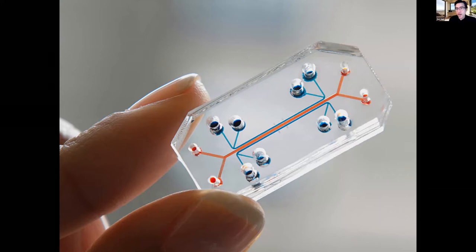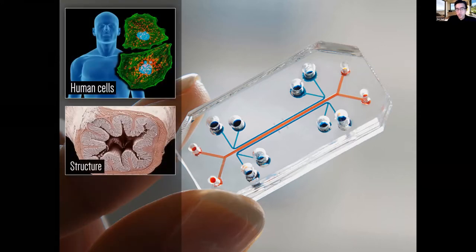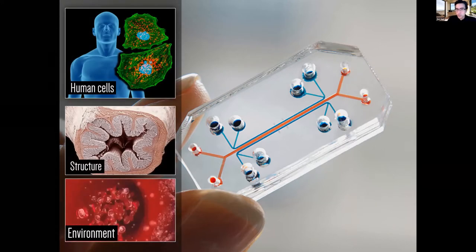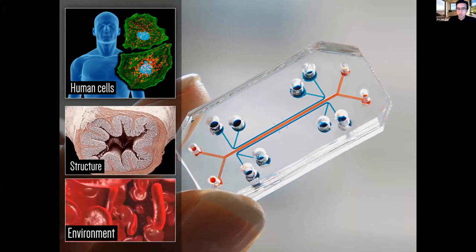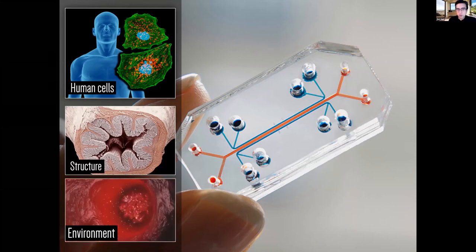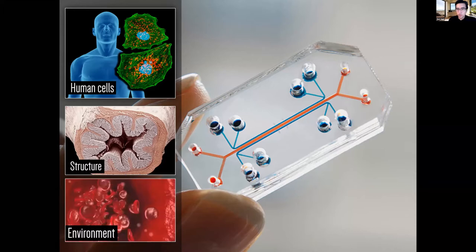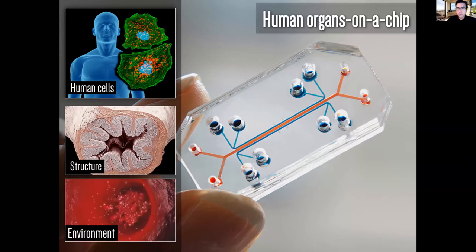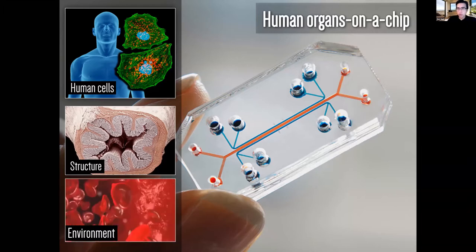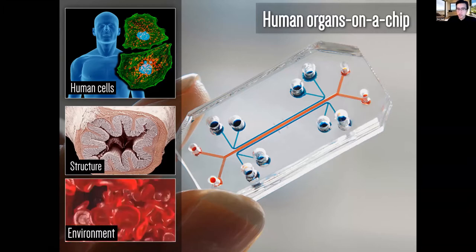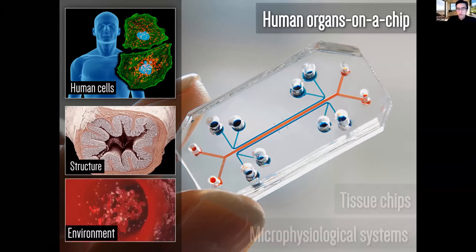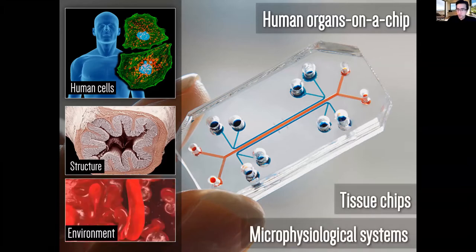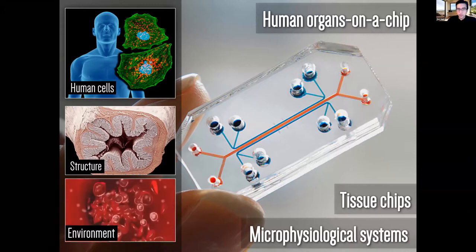What we do is fabricate micro devices like the one shown on this slide. We use them to culture human cells in a very realistic physiological environment, for the purposes of mimicking human tissues and organ units for a variety of applications, including drug testing. You might have heard the term 'human organ-on-chip' — that's the name of the technology we develop and use in our lab. These systems are also referred to as tissue chips or microphysiological systems.